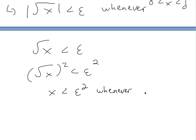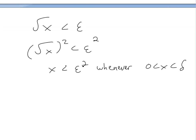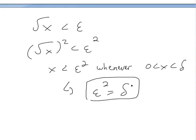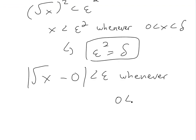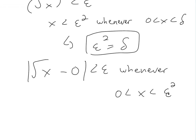We can write this for the same cases above. This suggests that if x is less than epsilon squared, then epsilon squared is equal to our delta, because x is less than both of them. So we can now write: |√x - 0| less than epsilon, whenever 0 less than x less than epsilon squared — meaning delta equals epsilon squared.